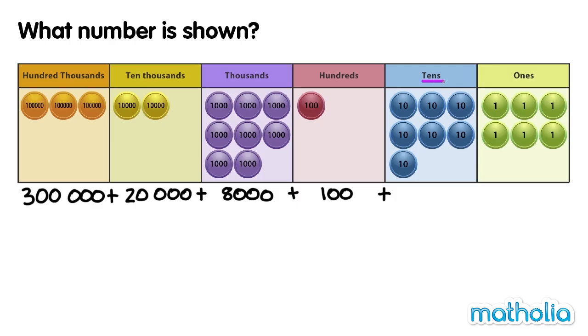In the 10s place, there are seven counters. They have a value of 70. And finally in the 1s place, there are six counters. They have a value of six.